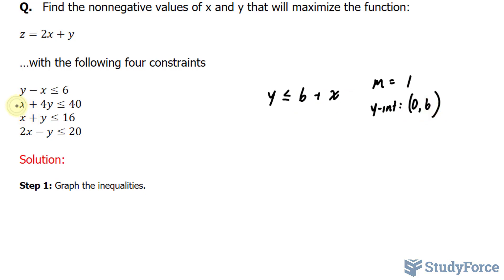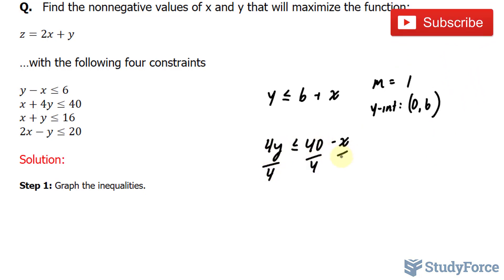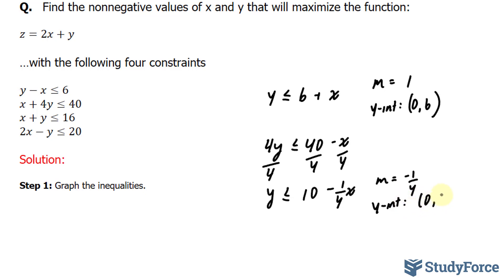My next inequality can be rewritten where I have 4y ≤ 40 - x, dividing both sides by 4 to isolate for y. I end up with y ≤ 10 - ¼x. Here, my slope is negative 1 over 4. My y-intercept has the point (0, 10).